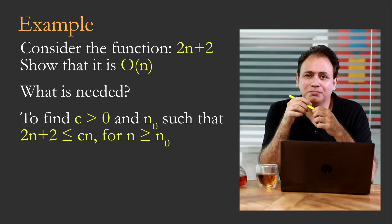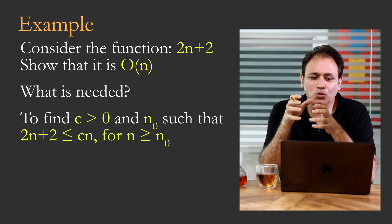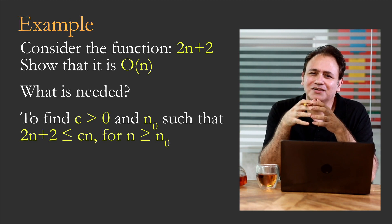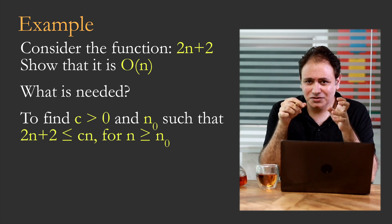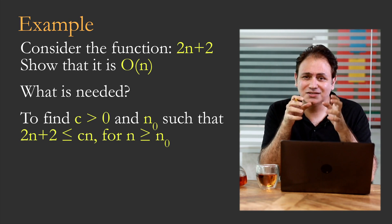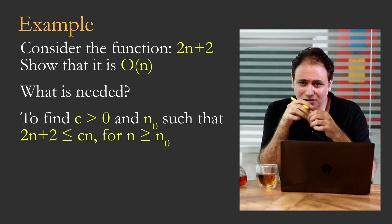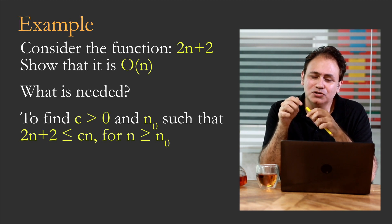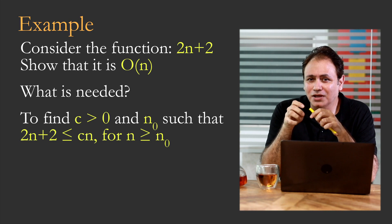So consider the function 2n+2. And our objective is to show that this is O(n). So what is it that's needed? What are we really after? We need to find a c greater than zero and an n₀ such that 2n+2 is less than or equal to cn for n greater than or equal to n₀.